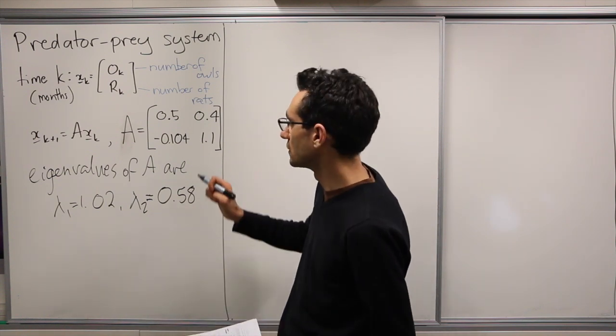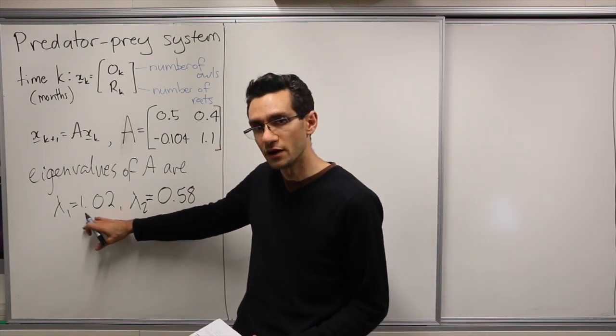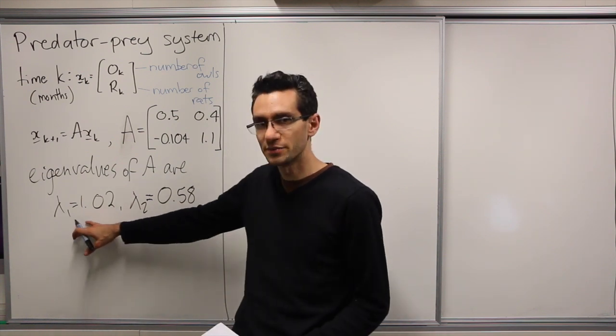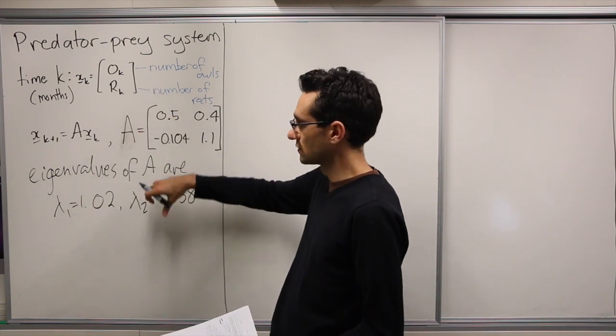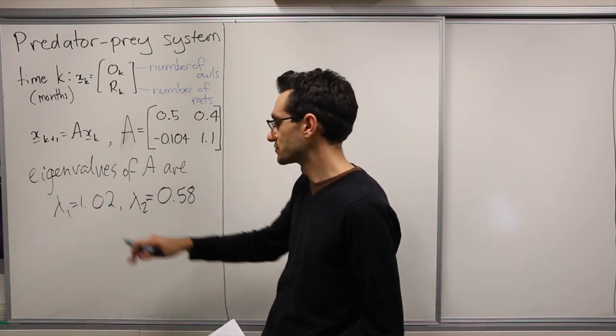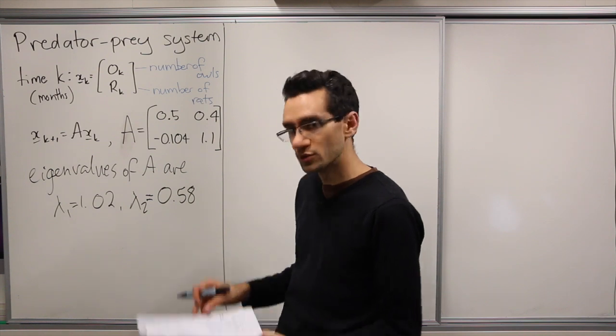So if we decompose, since we have two different eigenvalues, we have two linearly independent eigenvectors. We're in R² and so the eigenvectors will form a basis for R².